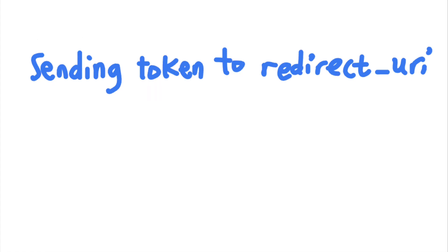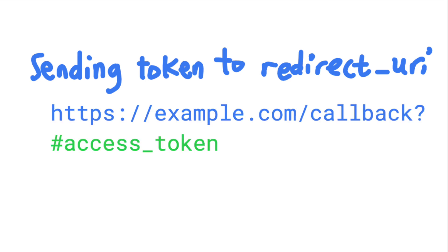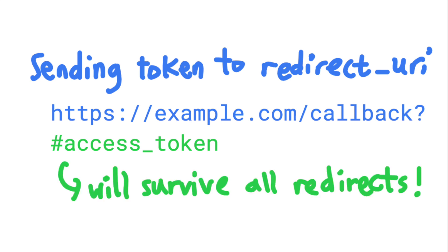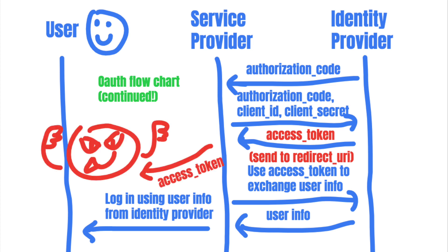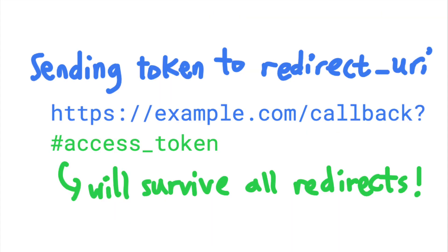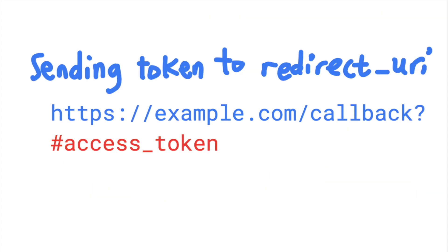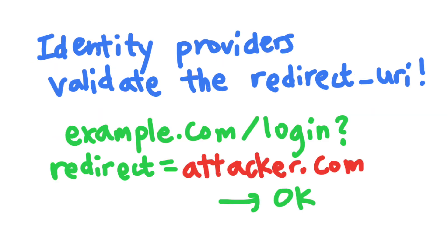Access tokens are often communicated via a URL hash — which is after the pound sign in a URL — and this portion of the URL survives all redirects. So if an attacker can make the OAuth flow redirect to the service provider and then to the attacker's domain, they can steal the access token from the URL hash and gain access to the victim's account. If the service provider has an open redirect vulnerability, the attacker can construct a redirect URI that will eventually redirect back to their malicious domain.